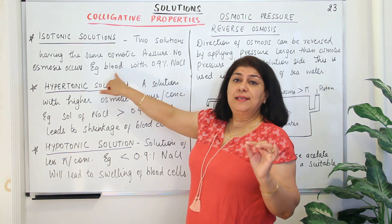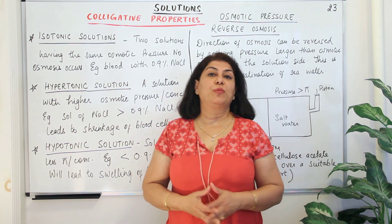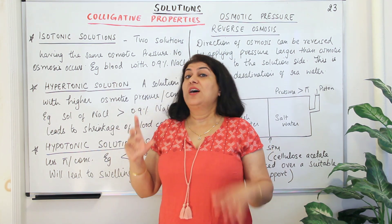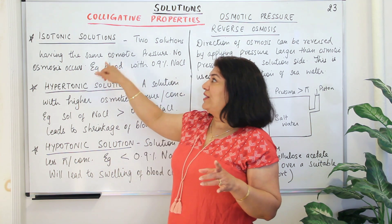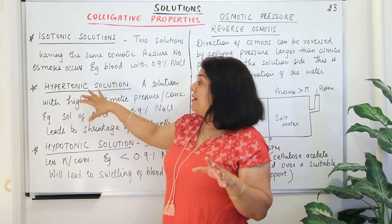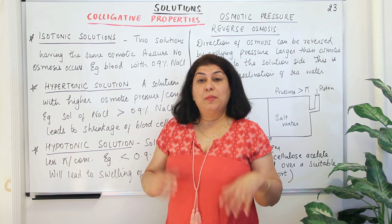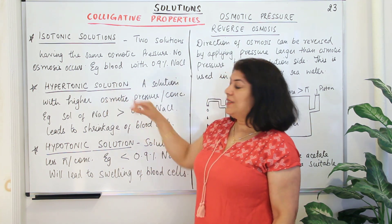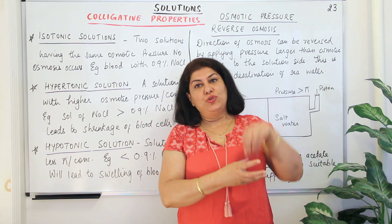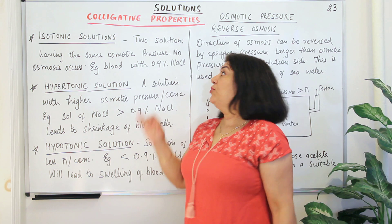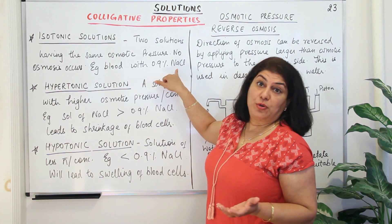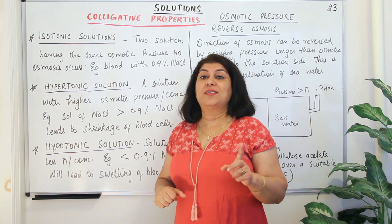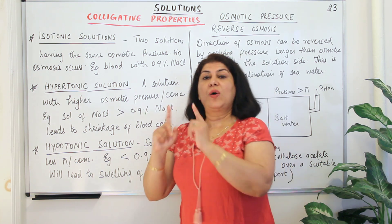Blood has a concentration equal to 0.9% sodium chloride. So if you have a solution with a concentration higher than 0.9% sodium chloride, osmosis would occur. In isotonic solutions, osmosis does not occur, but in hypertonic and hypotonic solutions, osmosis does occur. Knowing whether it is hypertonic or hypotonic is important because it decides the direction of osmosis. If blood cells are placed in a solution with more concentration than 0.9% mass/volume sodium chloride, the solution is hypertonic. Osmosis always occurs where the solvent moves from lower concentration to higher concentration.